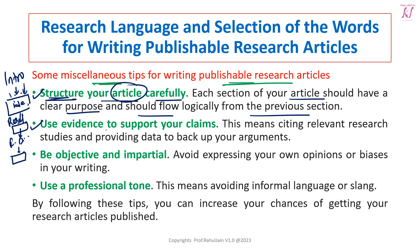The second miscellaneous tip for writing a good publishable research article is to use evidence to support your claims. If you are mentioning any particular claim — saying this is a fact — you must provide proper evidence, such as mentioning the book, page number, publisher, or author. You can also support your claims by citing websites from where you have taken or referred to the data. Your citations should be relevant, as they provide data backup for your arguments.